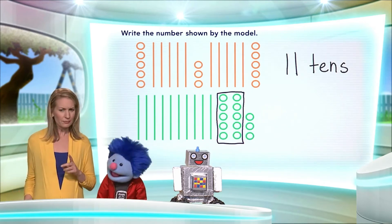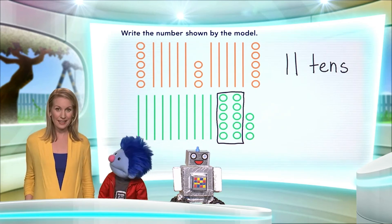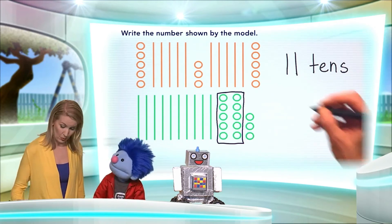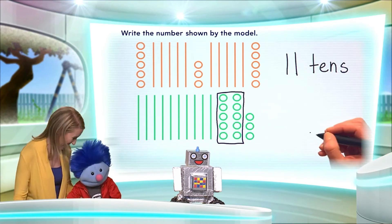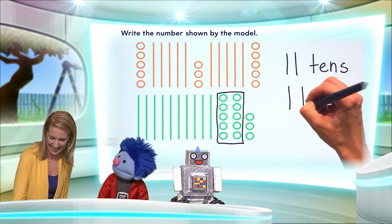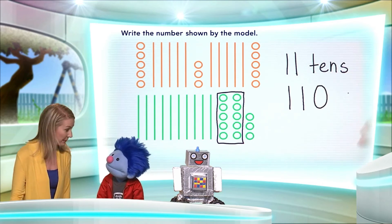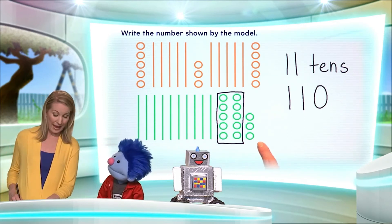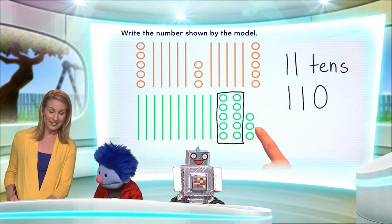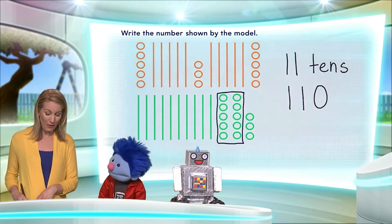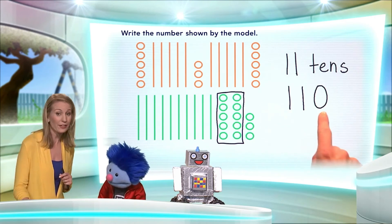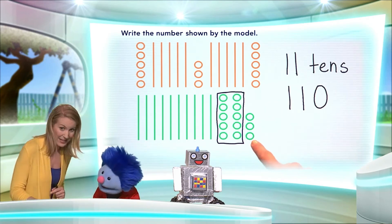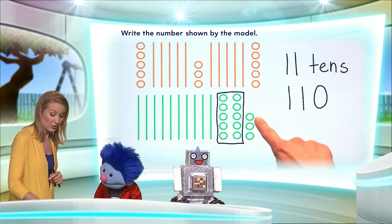Well done — eleven tens. Now, didn't we learn that eleven tens is...? I need a little help. It's one hundred ten. That's right — one hundred ten. I'm sure you're not alone in forgetting that, but that's something we want to remember. One hundred ten. And then we have how many more? One, two, three — we have three more. So basically, what we have is one hundred ten and three more: one hundred ten, one hundred eleven, one hundred twelve, one hundred thirteen.